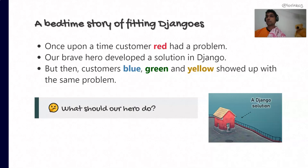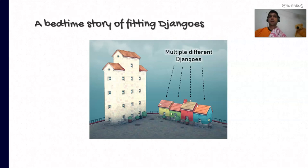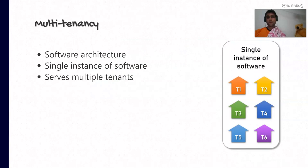So what should our hero do, given that there was a Django solution already implemented? One possible solution, since we're just talking about four customers, would be to copy and paste — clone the existing code into multiple different Djangos. While this works for four customers, the more colorful customers we get, this quickly becomes unfeasible and unsustainable. Instead, the brave hero could attempt to re-architect the solution so that a single instance of the code is capable of handling the needs of multiple tenants. This is what in software development is called multi-tenancy.